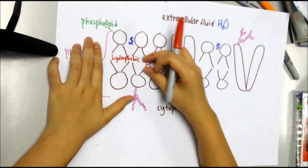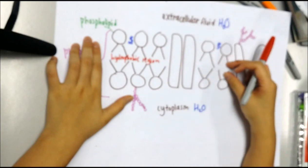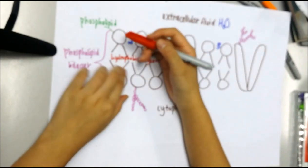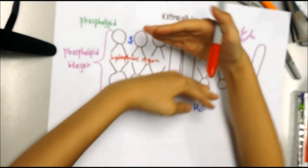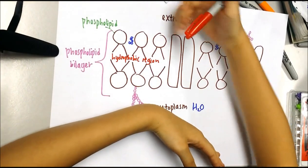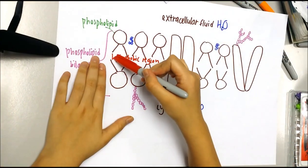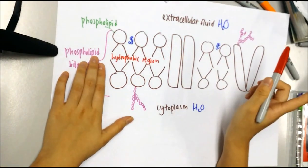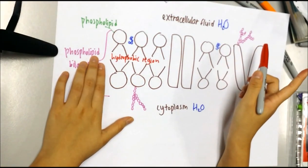The hydrophobic region in the bilayer acts as a barrier to separate the extracellular fluid from the cytoplasm, because the hydrophobic region does not consist of any water.